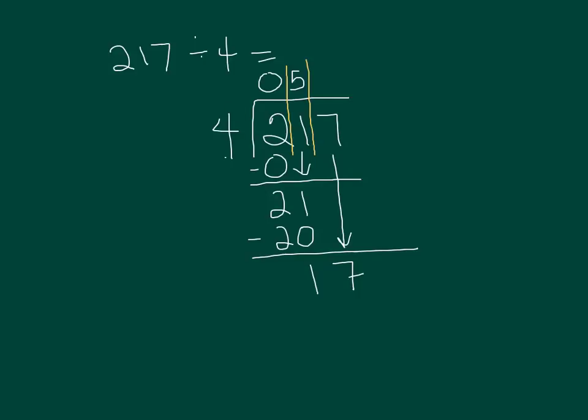Alright now I am 4 into 17. 4 times 4 is 16. 4 times 5 is 20 which is too high so it must be 4 times 4 which is 16. And 7 take away 6 is 1.